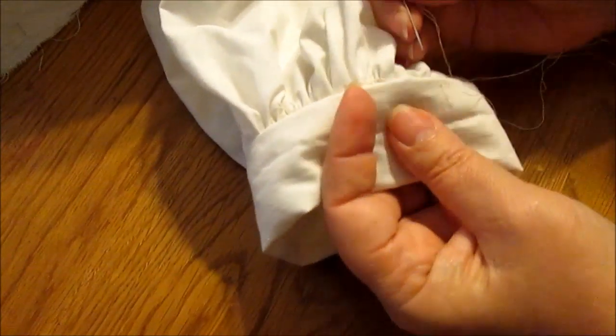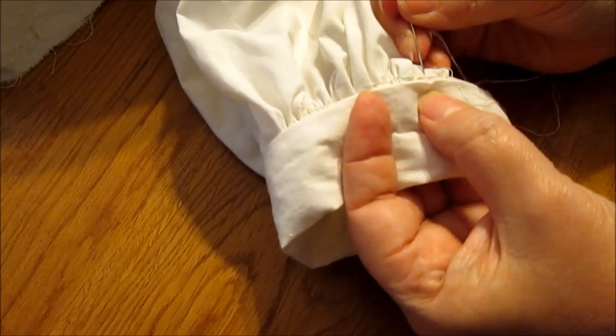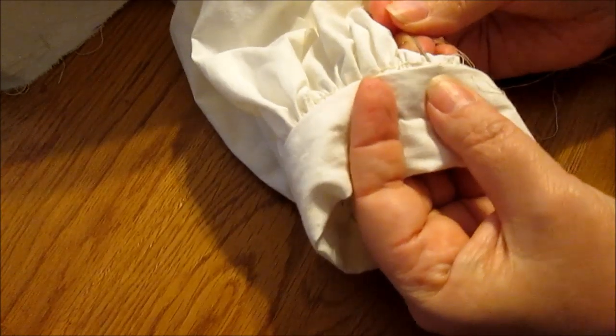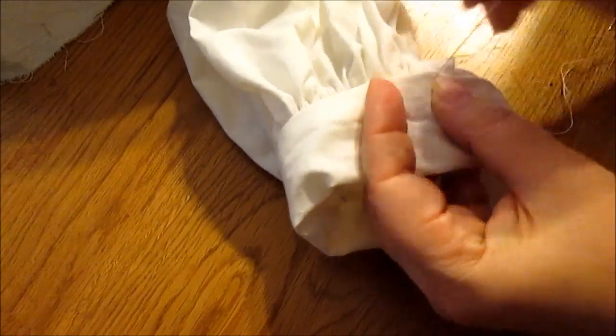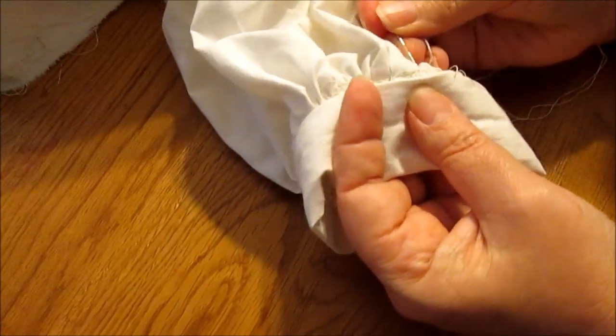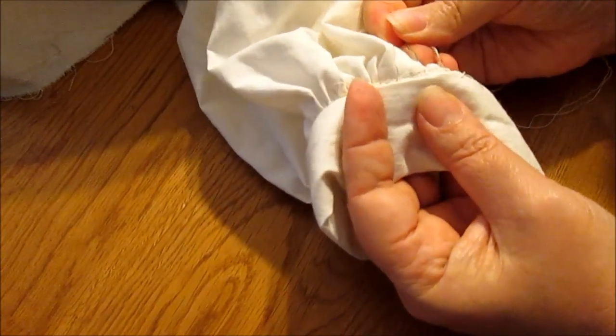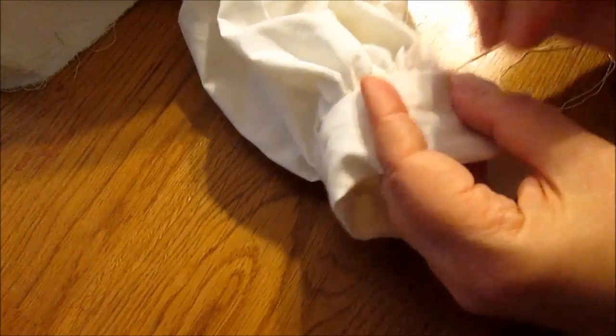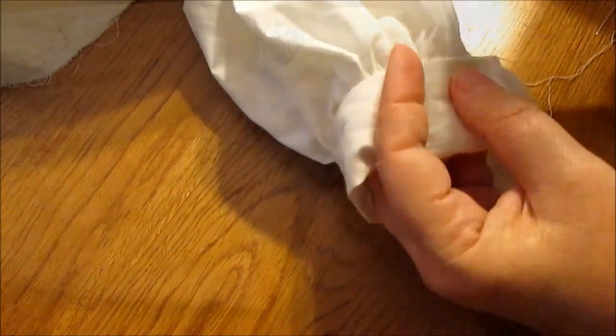Pull that up. Once again, turn it back just enough you can see where the stitch line is. Tiny little stitch like that. And we're going to go all the way around. You don't have to take very tiny stitches here. This is just to finish off the edge of the cuff on the inside.